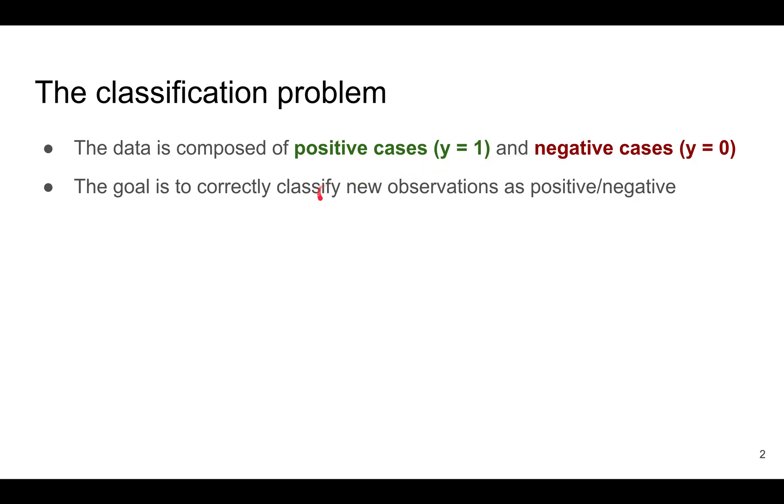You are given new observations for which you know the x values but you don't know the labels y, whether they are positive or negative. The goal is to use the x's to predict the correct labels.